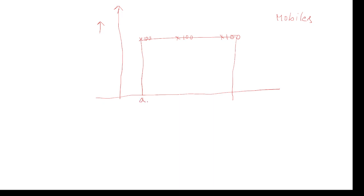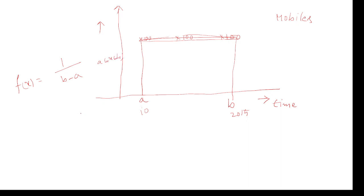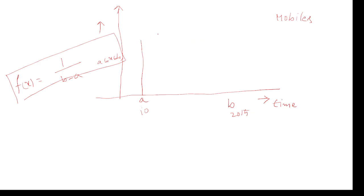For example, from a to b — from the 10th day to the 20th day — this is the time range, and the data is uniformly distributed. In that case, the formula we use to calculate the probability is f(x) = 1/(b − a), for the limits a ≤ x ≤ b. This is the probability density function to calculate if the data is uniformly distributed.